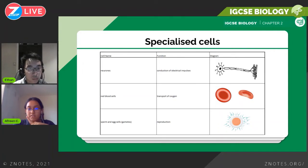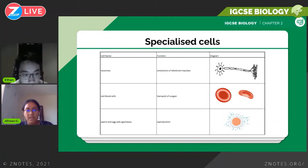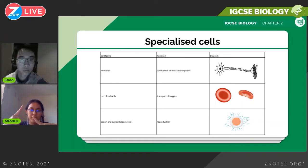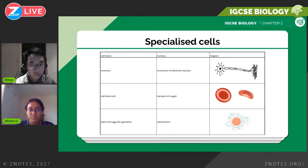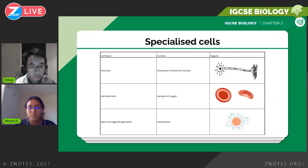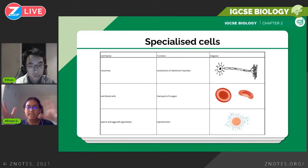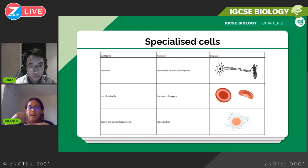The next specialized cell is the neuron or nerve cell — neurons conduct electrical impulses and relate to involuntary and voluntary reactions involving your brain and spinal cord. You'll look more at adaptations and functions in the coordination and response chapter. Then there are red blood cells. They have a biconcave shape — a flat disc — and they have no nucleus so that more oxygen can be accommodated. The main function of red blood cells is to transport oxygen around the body.